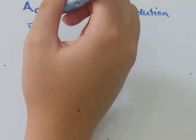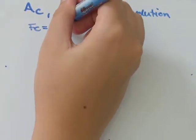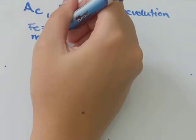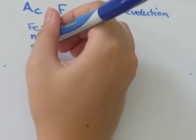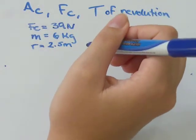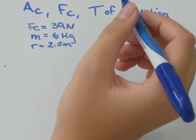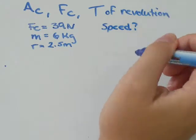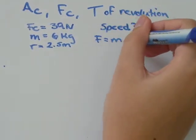Fc was equal to 39 newtons. The mass was equal to 6 kilograms. The radius was equal to 2.5 meters. So first we're asked what is the speed. I'm going to start with F equals ma.